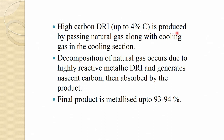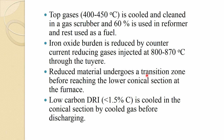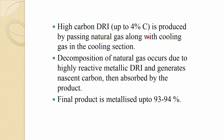High carbon DRI, up to 4 percent, is produced by passing natural gas along with cooling gas in the cooling section. Carbon deposition reaction may occur, increasing carbon content. Decomposition of natural gas occurs due to highly reactive metallic DRI, generating nascent carbon which is then absorbed by the product. The final product is metallized up to 93 to 94 percent.